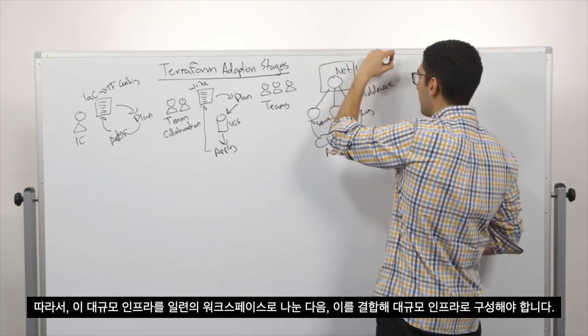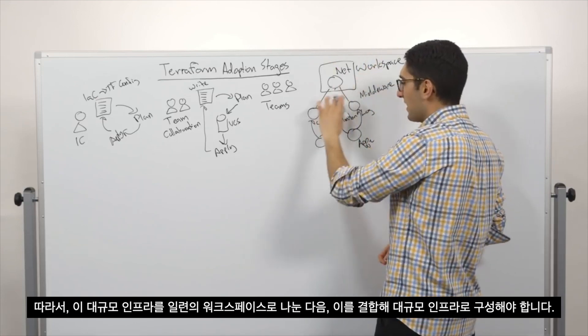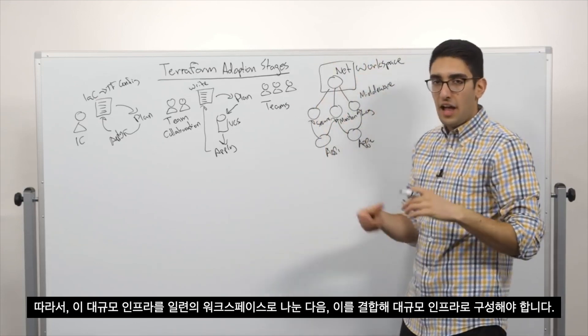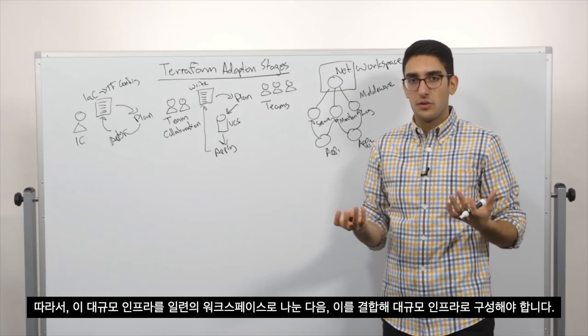And so what Terraform calls these is each of these is a workspace. So what we want to do is decompose this larger infrastructure into a series of workspaces and then compose them together into a larger infrastructure.